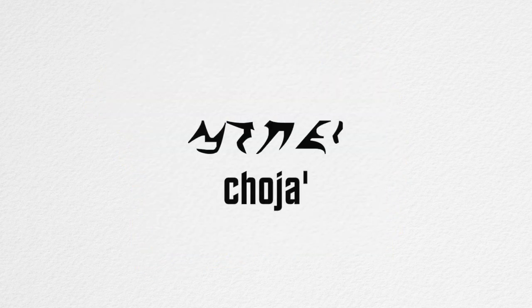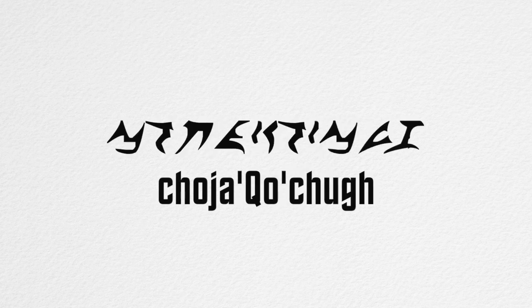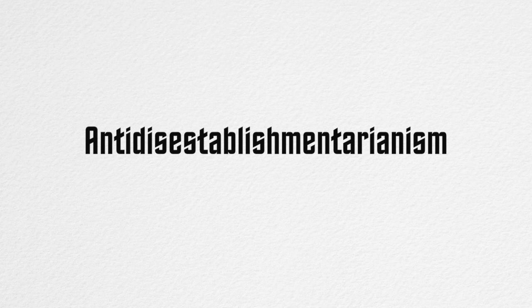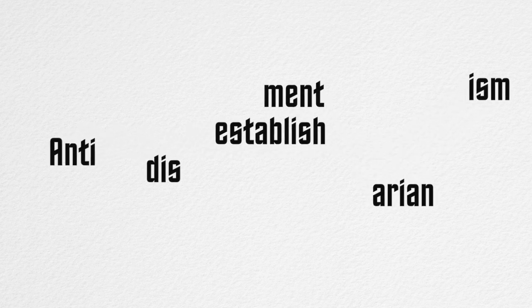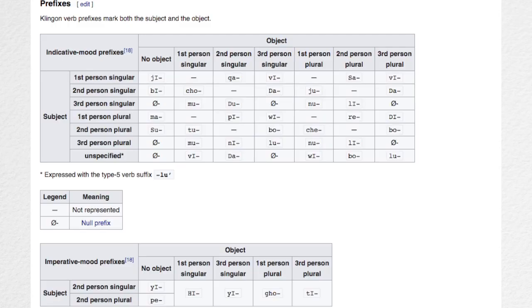First off, one core part of Klingon grammar is that Klingon is an agglutinative language, like Korean or Turkish. This means that you can often string sentences together into just one word, through prefixes and suffixes. Klingon prefixes are all used for identifying the subject and the object, though interestingly at the exact same time.